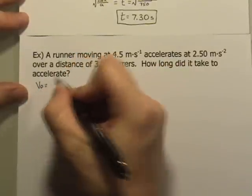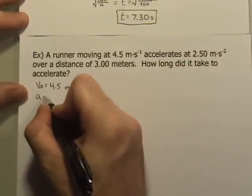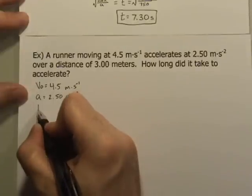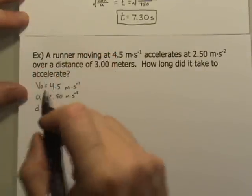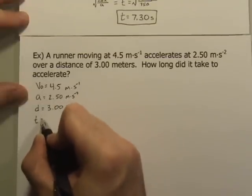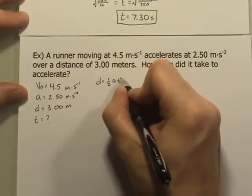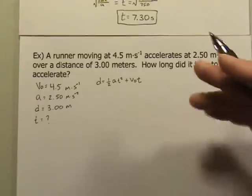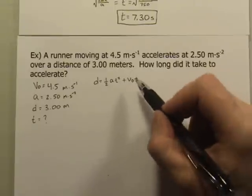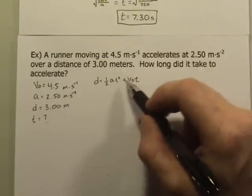We have V-naught of 4.5 meters per second, an acceleration of 2.50 meters per second squared, a distance d of 3.0 meters, and we're looking for t. The equation is d equals one half at squared plus V-naught t. Obviously the first thing I'll do is look and see if there's anything I could get rid of to eliminate the quadratic aspect, but in this case the distance has a value, A has a value, t has a value — I'm solving for it — and V-naught has a value. Nothing is going to go away.